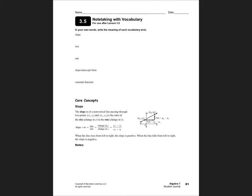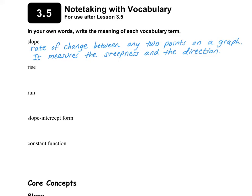Please have your journals open to page 81. Slope is the rate of change between any two points on a graph and it measures the steepness and the direction of the line.